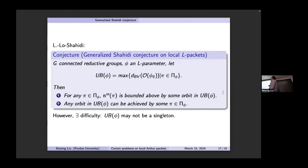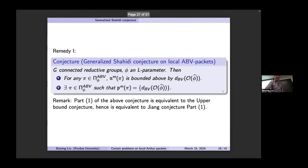You expect this to be the upper bound. For π in the packet, it is bounded by something, and any orbit here is expected to be achieved by some π. However, there is difficulty: this set may not be a singleton. One remedy involves the local Aubert-Barbasch-Vogan packet: the Arthur packet is an enlargement of a certain L-packet, and the ABV-packet is an enlargement of any L-packet. For real groups this is defined by Adams-Barbasch-Vogan; for p-adic groups by Cunningham and his group.